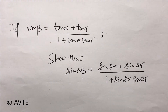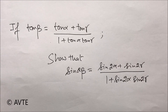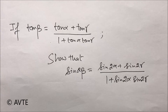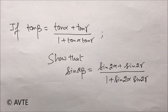If tan β is equal to (tan α + tan γ) / (1 + tan α·tan γ), then show that sin 2β is equal to (sin 2α + sin 2γ) / (1 + sin 2α·sin 2γ).